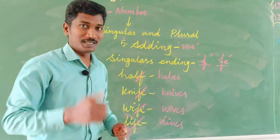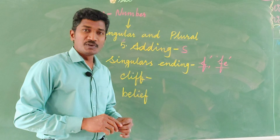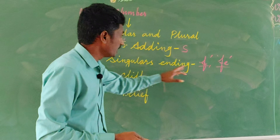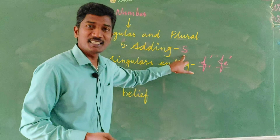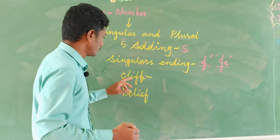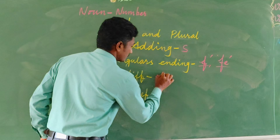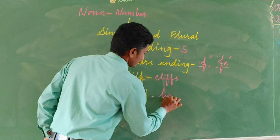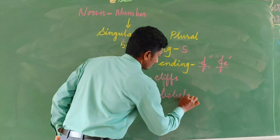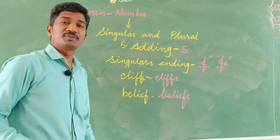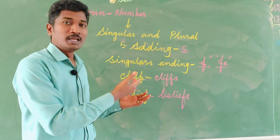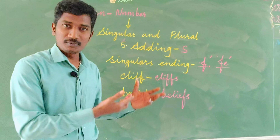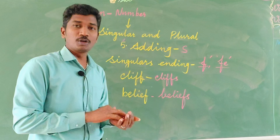However, here also there are some exceptions. Even though a word is ending in 'f' or 'fe', we add just 's' to make plural. For example, cliff → cliffs, belief → beliefs, and handkerchief → handkerchiefs. Just add 's' to make plural.